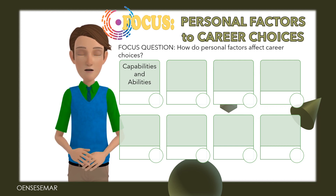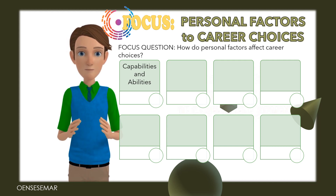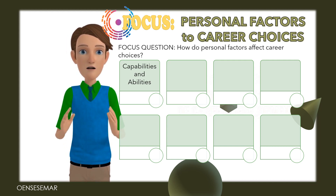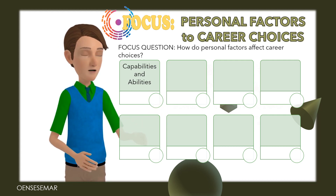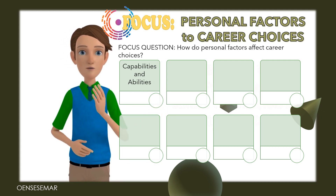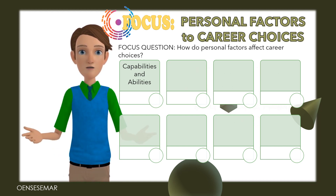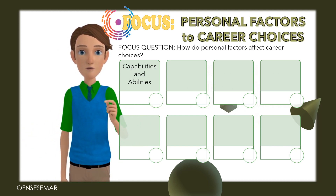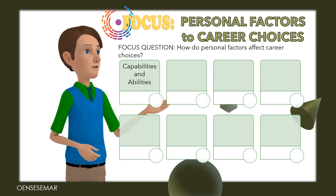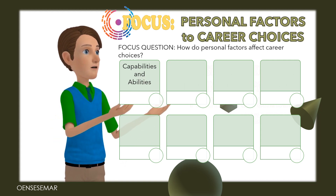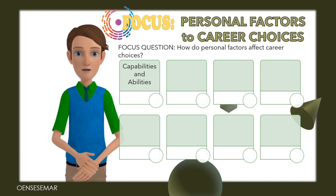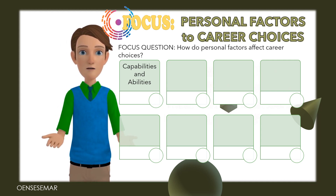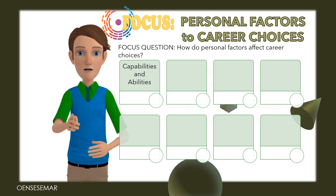First, capabilities and abilities. Trait factor theory is one of the first theories of career development, which considers your strengths and skills as well as how they would match a certain vocation, and is still utilized today. These ideas advocate creating occupational profiles for certain vocations, as well as detecting distinctions among individuals and matching them to occupations based on these characteristics.